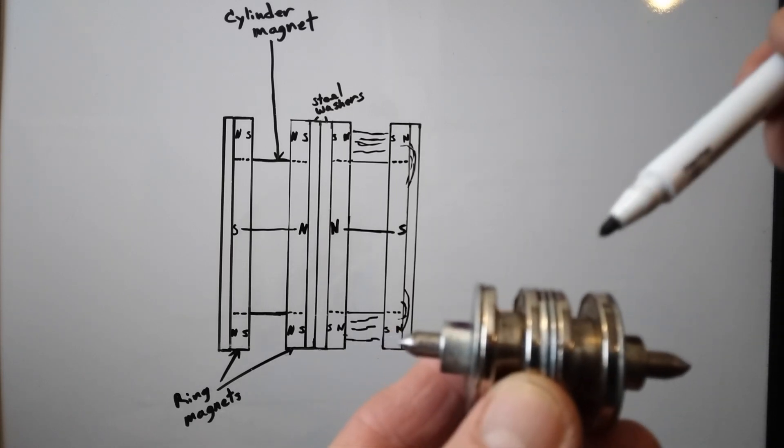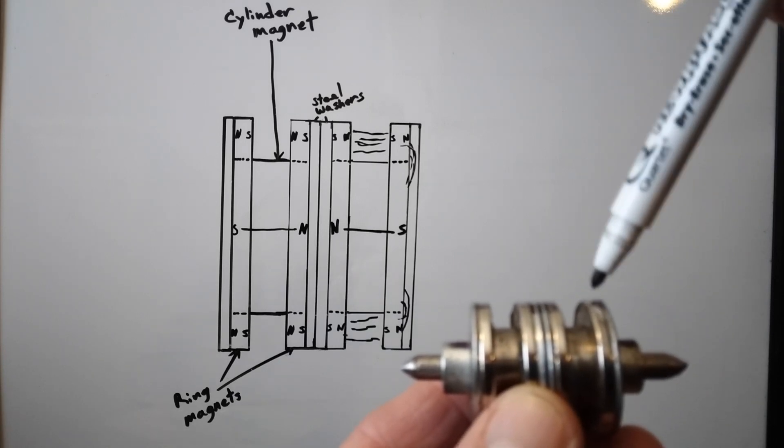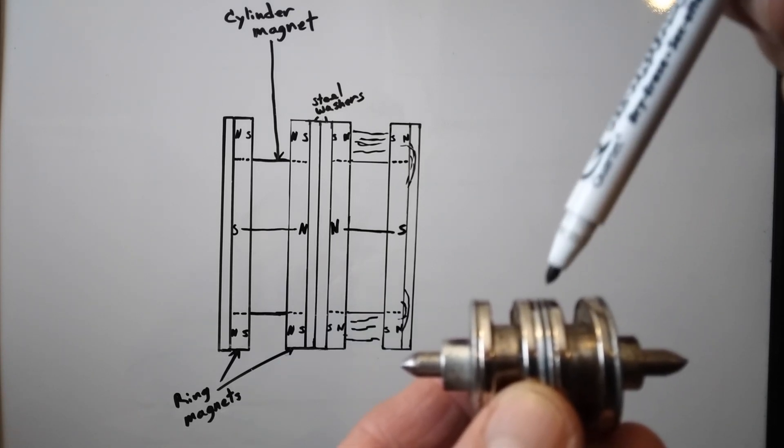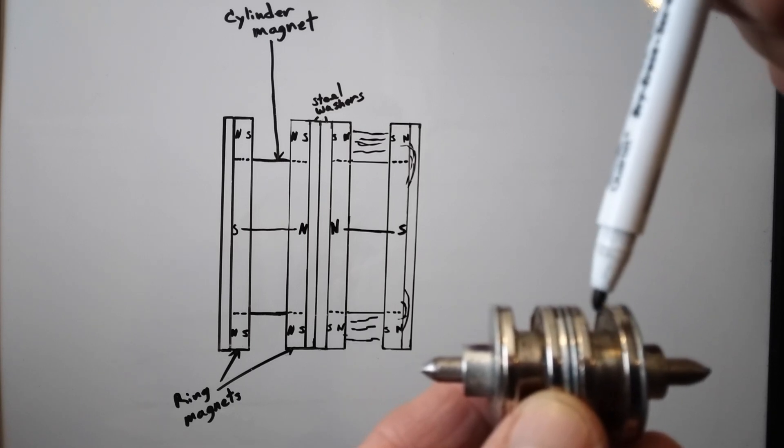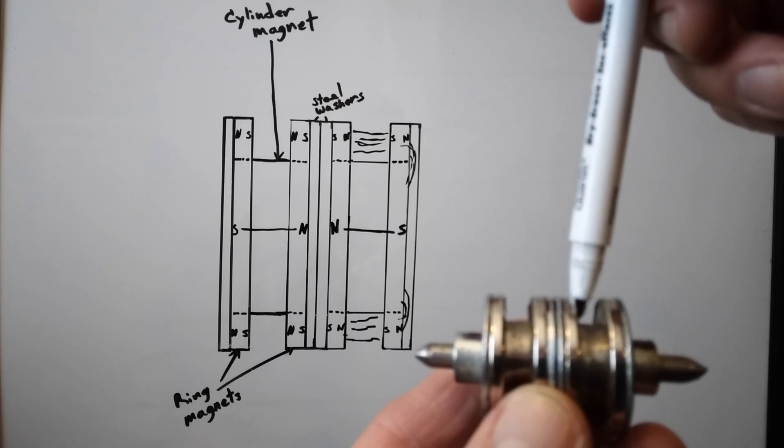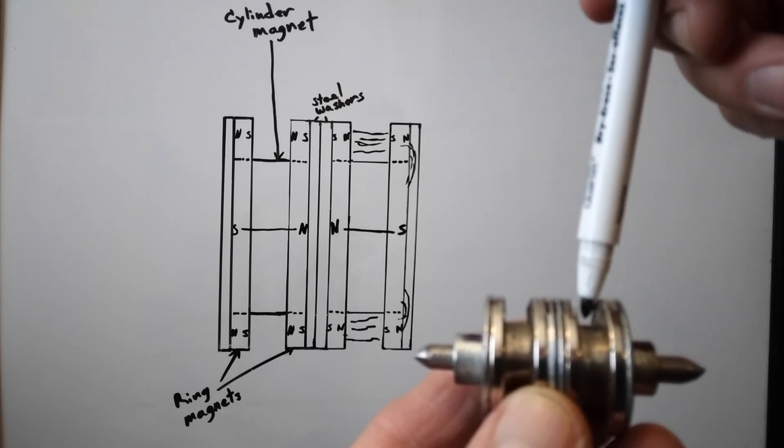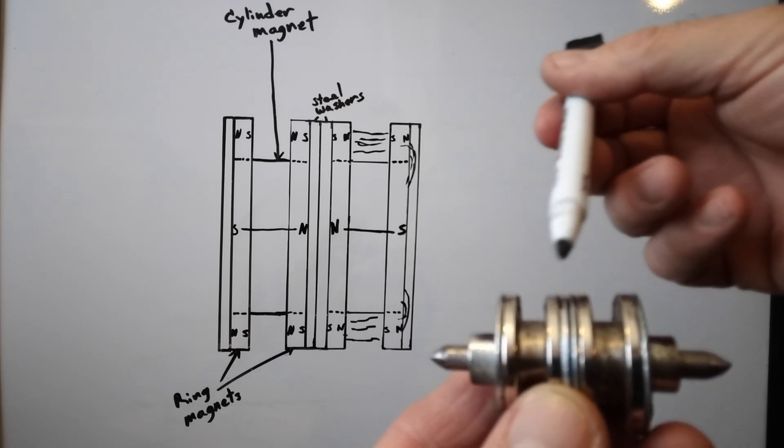You could also do it without the ring magnets. Just put the washer up there and it would still concentrate it more between the edges of the washer. But these ring magnets on here concentrate it more, so we just got it in between right here. It's very concentrated. And that's where you put the wires, one on each side.